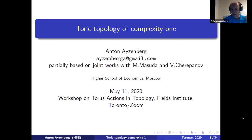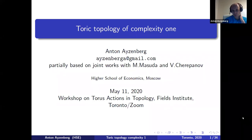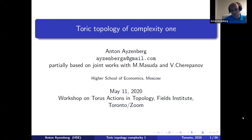I will speak about torus actions of complexity one. Some parts of this work were made together with Mikiya Masuda, and some parts are made together with Vladislav Cherepanov from Moscow. First, I want to define what complexity is and recall some basic things about torus actions. I'll remind all necessary definitions, something about complexity zero — which is classical in toric geometry and toric topology — then speak about complexity one, and at the end, a little bit about general complexity.